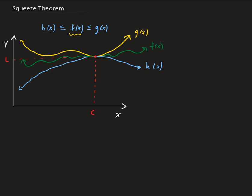So we have a lower bound, and g is our upper bound. So given this situation.